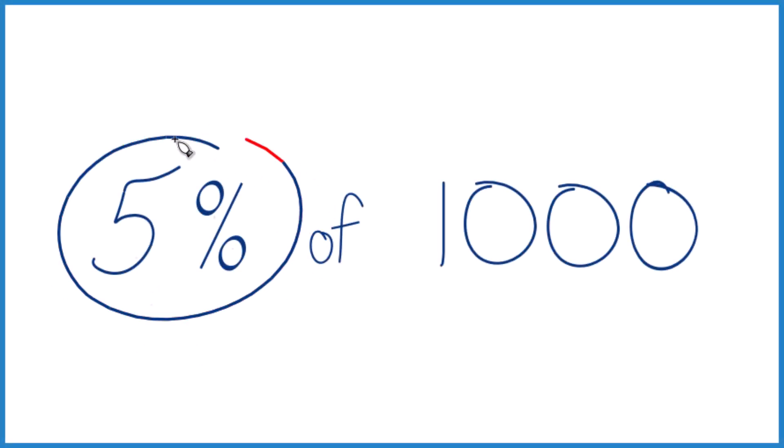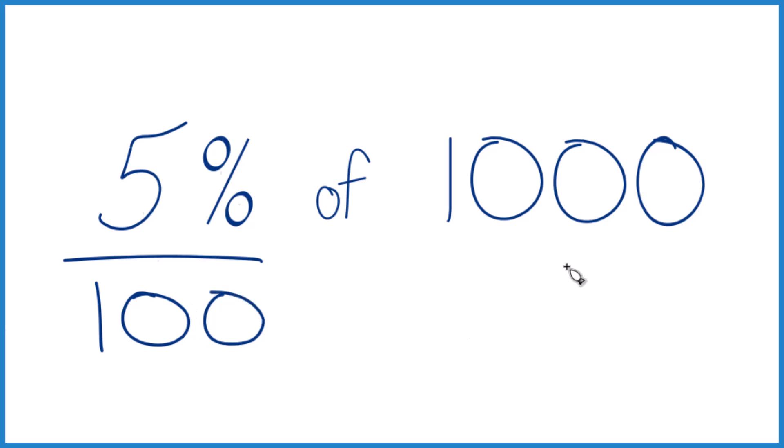If you need to take 5% of 1,000, here's how you do it. When you think of 5%, that's really 5 per 100. So we could say if we had just 100, it would be 5. But we have another place there, so it's going to be 50. So 5% of 1,000 is 50.